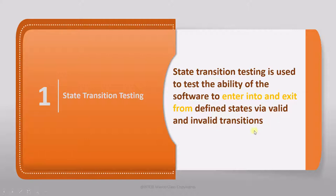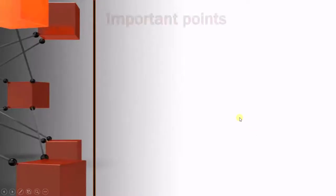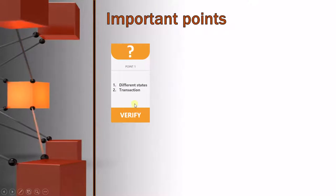To understand this point, let's move further. What are we going to verify? We are going to verify different states—valid or invalid states—and valid and invalid transactions.